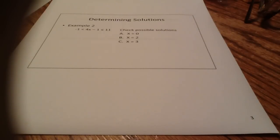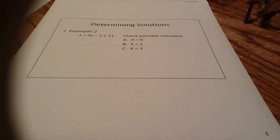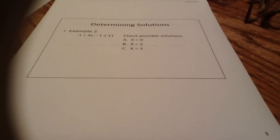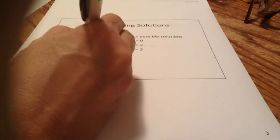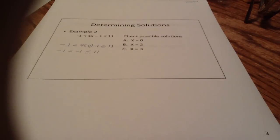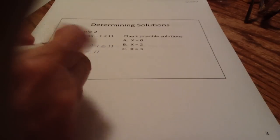Let's look at another example — checking possible solutions in a double inequality. You'll notice there's an inequality symbol on both sides of the expression in the middle. We're going to check solutions here first. For x equals 0: negative 1 is less than 4 times 0 minus 1, which is less than or equal to 11. Simplifying: negative 1 is less than negative 1, which is not true. So 0 is not a solution.